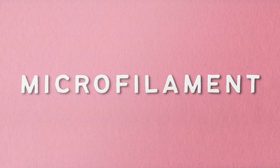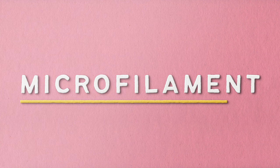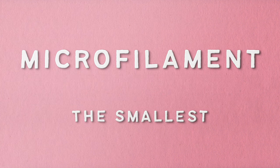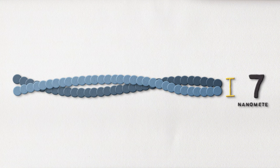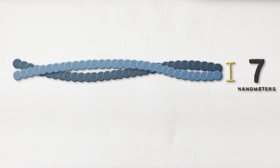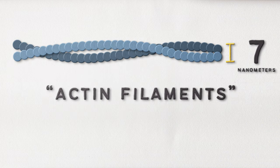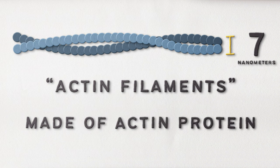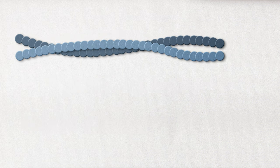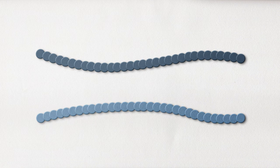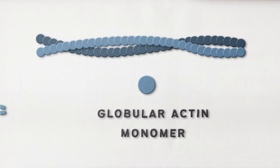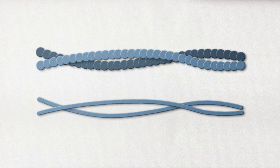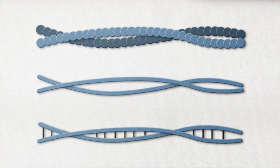The last type of filament that makes up the cytoskeleton is the microfilament. As the name suggests, it's the smallest of all the filaments, measuring at about seven nanometers in diameter. Microfilaments are also known as actin filaments because, you guessed it, they're made up of a protein called actin. Microfilaments may look like long strands of protein, but they're actually composed of multiple globular actin monomers that arrange themselves in something sort of like a double helix — like the twisted structure that DNA has.